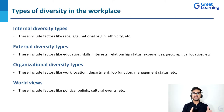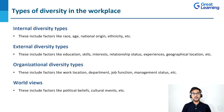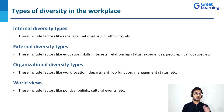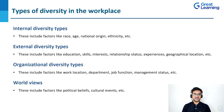In internal diversity, factors like race, age, national origin, and ethnicity are included because these are things you are born with. In external diversity, we have educational skills, interests, relationship status, experiences, and geographical location. Organizational diversity types include work location, department — sales, marketing, content — job function, and managerial or management status. Worldviews include factors like political beliefs and cultural events. These are the four main types of diversity in the workplace.